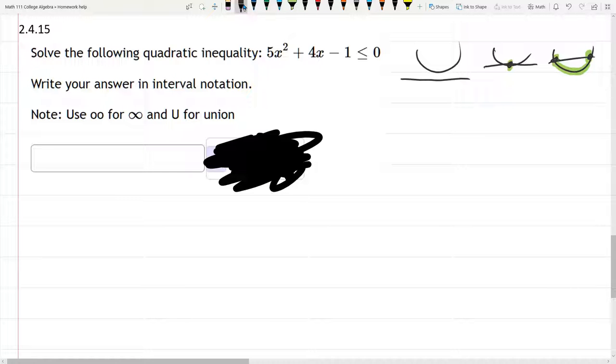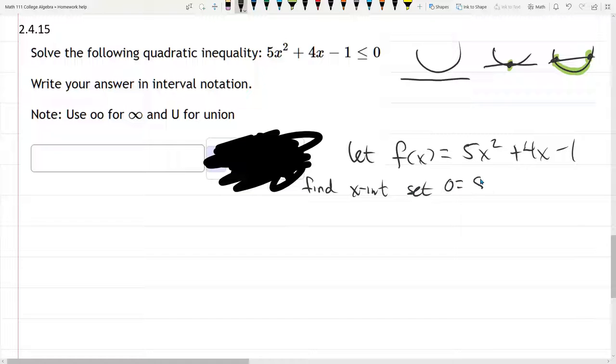So let's get started. So I'm going to let f of x equal this quadratic, 5x-squared, plus 4x minus 1. All right, several ways to solve this. We want to find x-intercepts.